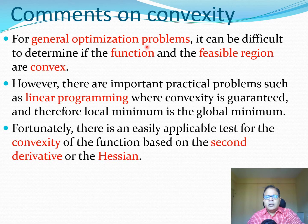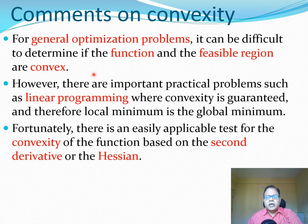For a general optimization problem, it can be difficult to determine if the function and feasible region are convex. This is typically because these functions often come from complex computer programs, and while you can plot them for one- or two-dimensional problems, beyond that it becomes very difficult to determine convexity. However, for the important practical problem of linear programming, convexity is guaranteed, and therefore the local minimum is the global minimum.